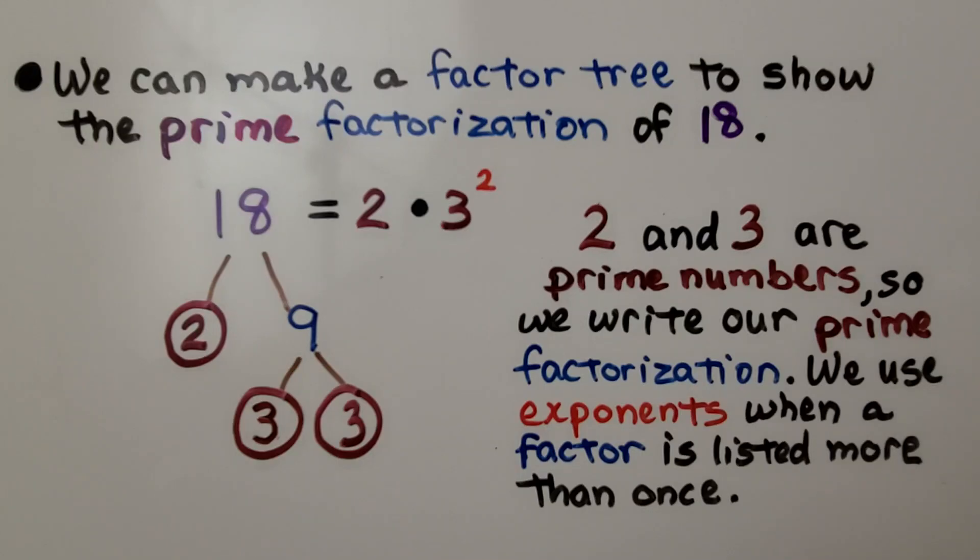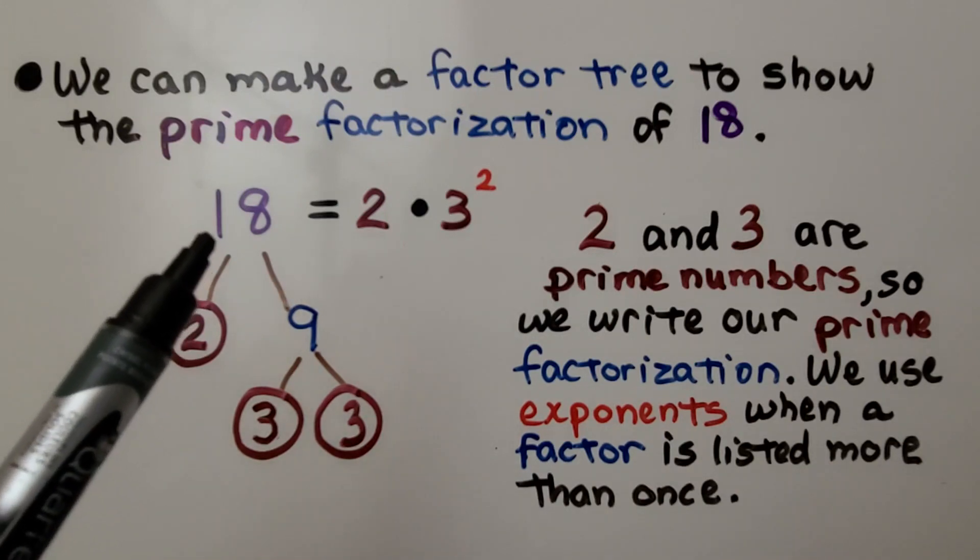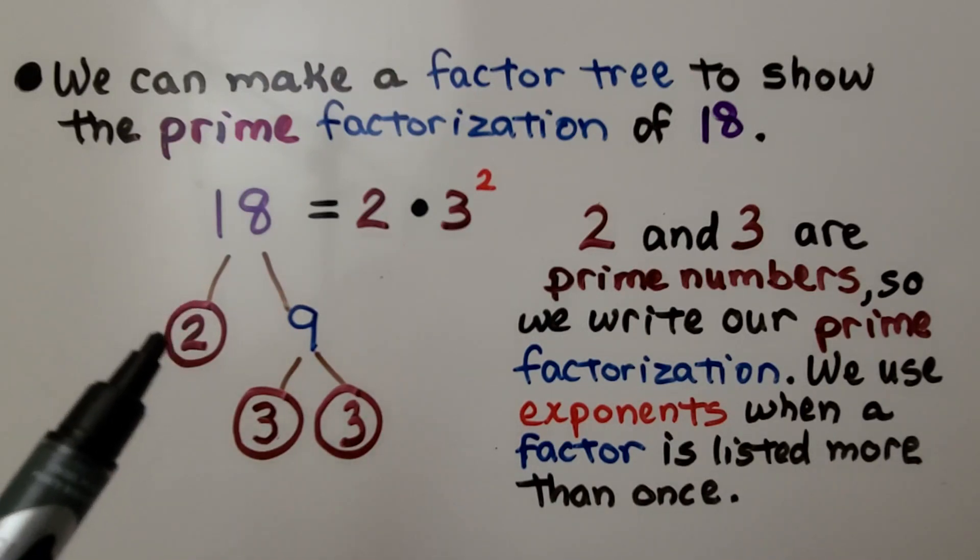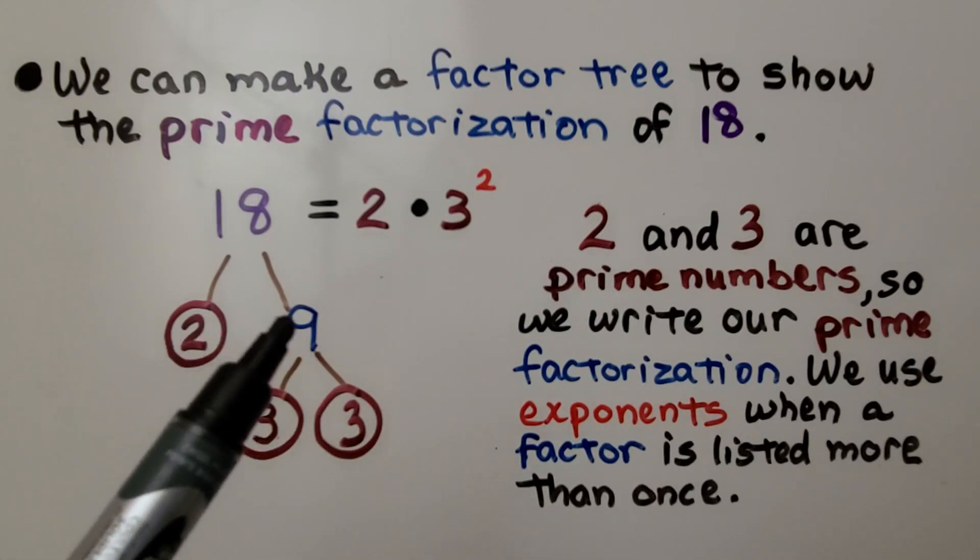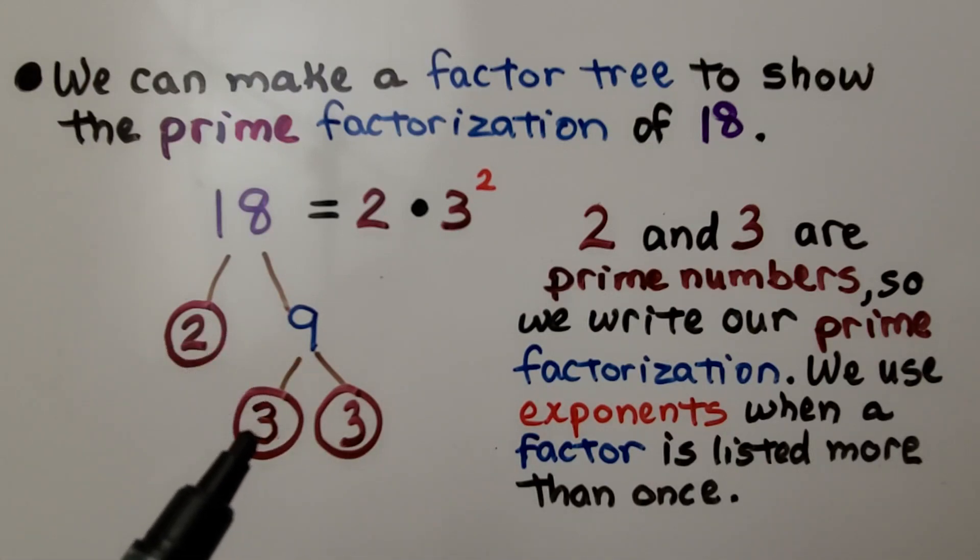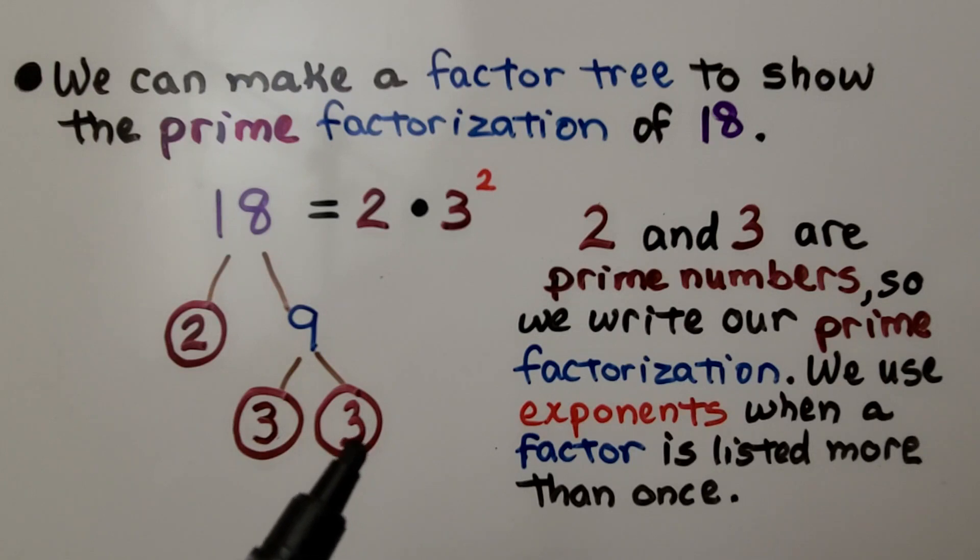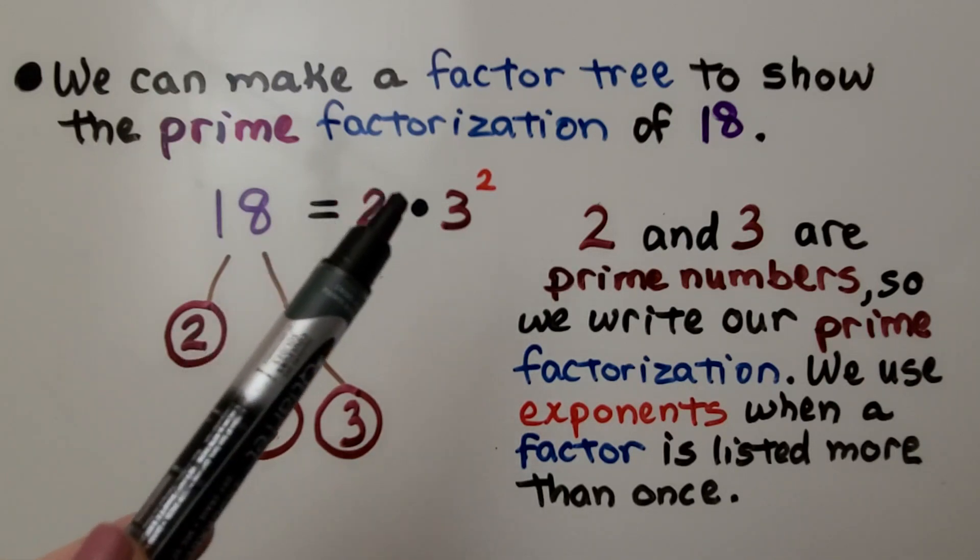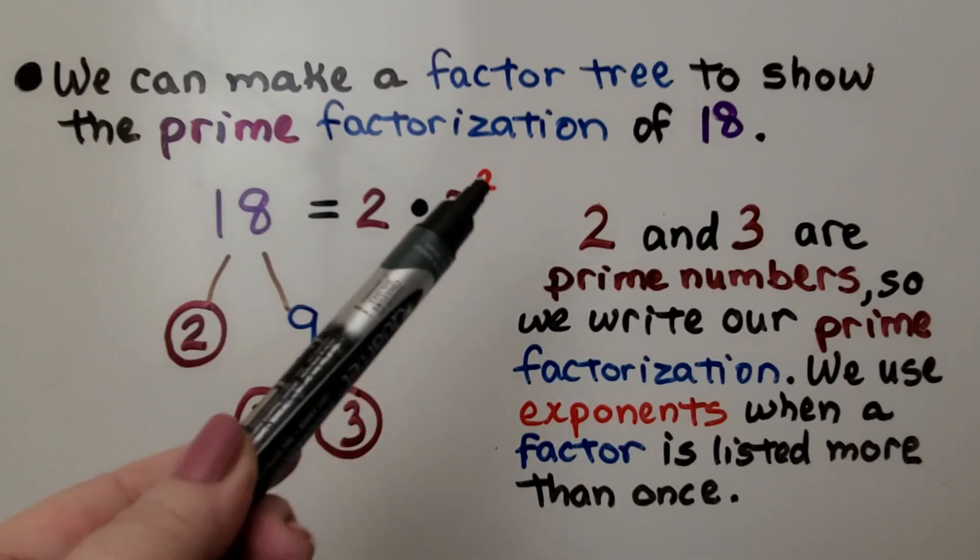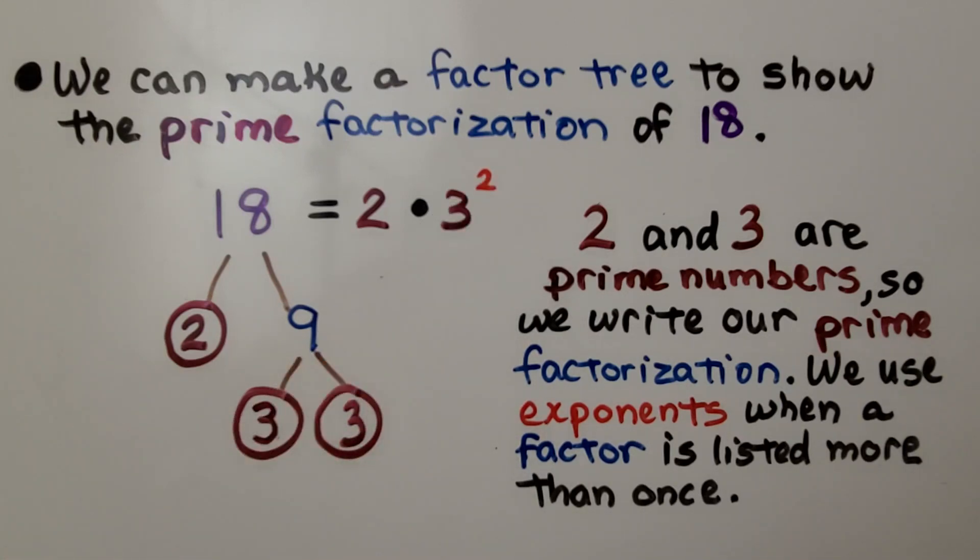We can make a factor tree to show the prime factorization of 18. We think, what times what is equal to 18? 2 times 9, but 9 can be split into the factors 3 times 3. So we have a 2, a 3, and a 3. And 2 and 3 are prime numbers, so we write our prime factorization. We use exponents when a factor is listed more than once. 3 is listed 2 times, so we have 3 raised to the second power.